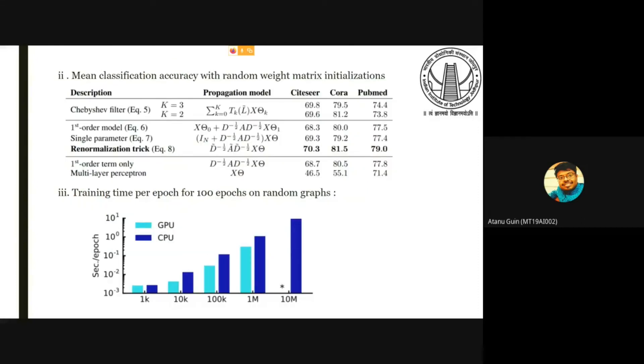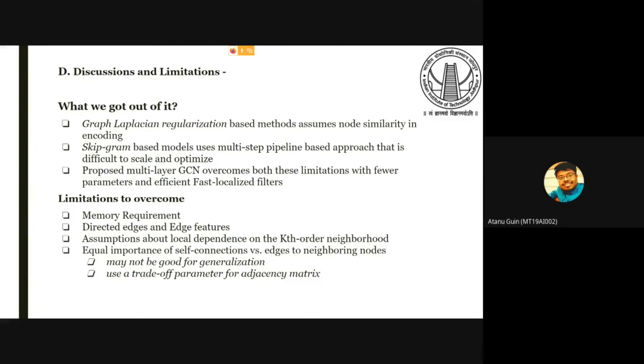They have shown the results for the renormalization trick which is performing very good for all datasets. They have also simulated some random graphs with different sizes and they have shown how it is performing efficiently and fast in GPU and CPU. What we get is that the graph regularization method that people were doing earlier assumed that the nodes are similar, which may not be the case for large graphs. Also for skip-gram based models, we need to use a multiple multi-step pipeline for scaling and optimization. But GCN overcomes both of these limitations by using fast fewer parameters and fast localized parameters.